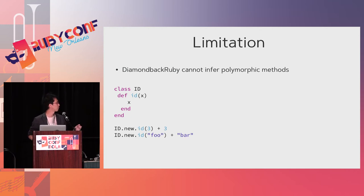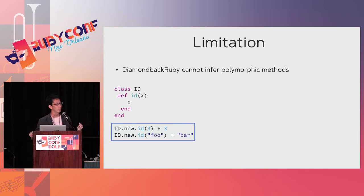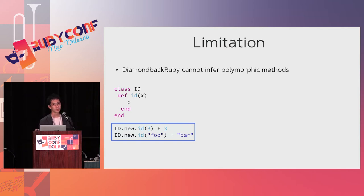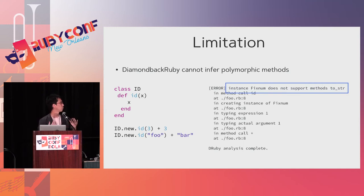Here is an example of a polymorphic Ruby program. The 'id' method takes one argument and returns it immediately. So 'id(id(3))' will be 3, and '3 + 3' will be 6. If you pass a string, the type of 'id("who")' is a string, so string concatenation also works — there is no type error in this program. But because DiamondbackRuby cannot infer polymorphic methods, it reports some type errors. If you want to define a polymorphic type method, you have to write annotations in your Ruby code.